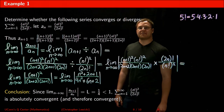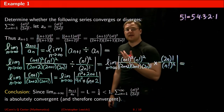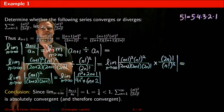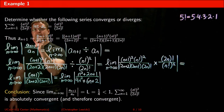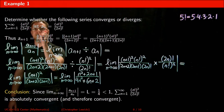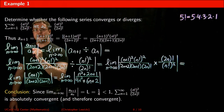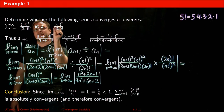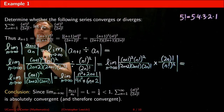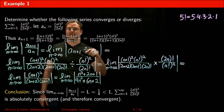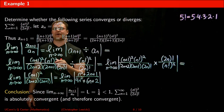Now let's apply the ratio test to an example. The first step is to define your sequence a(n) as well as a(n+1). The sequence a(n) is always the sequence given to you, whereas a(n+1) is a(n) with every n replaced by n+1.